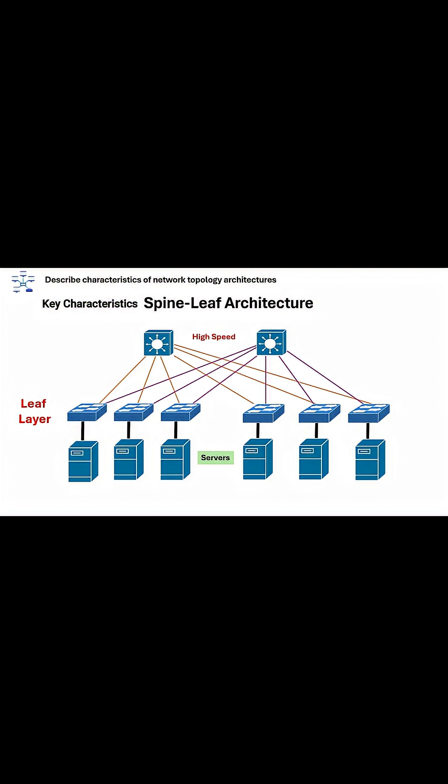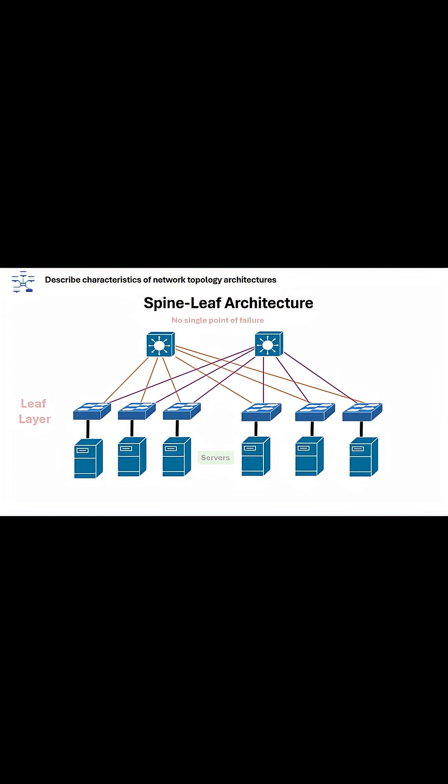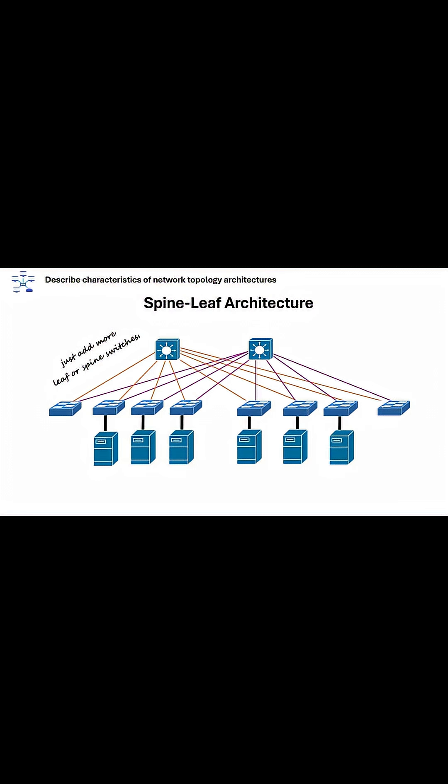The key characteristics of spine-leaf architecture is that it's highly scalable and redundant since every leaf is connected to every spine, and there is no single point of failure. Spine-leaf is also easier to expand. Just add more leaf or spine switches.